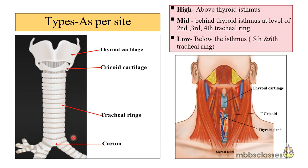When performing tracheostomy, you must know the structures encountered. Going from superficial to deep: the skin, then superficial fascia containing the anterior jugular vein in the suprasternal space, then the investing layer of the deep cervical fascia. For details on cervical fascia anatomy, please refer to our video on that topic.